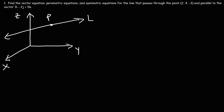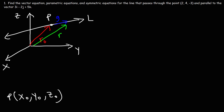Let's say we have a point with values x0, y0, and z0. This is going to be the position vector r0. Now let's extend this point by another vector — let's call it g. If we take the vector sum of r0 and g, it gives us position vector r, which defines the vector equation of the line. Vector g is parallel to vector v, so g equals t times v.